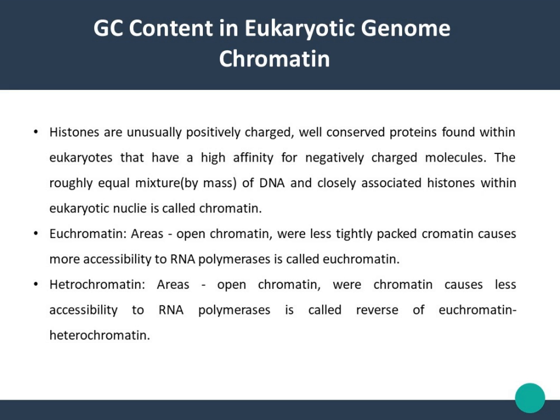The packaging of DNA differs significantly from one cell type to another, and genomic sequence information aside from CpG islands gives only hints as to what a region's chromatin structure will be. Among those hints is what can be gleaned from isochore compartmentalization, which is described next.